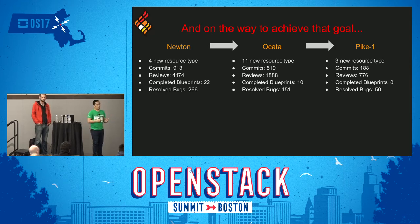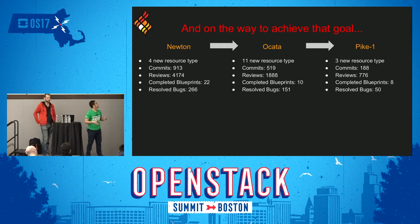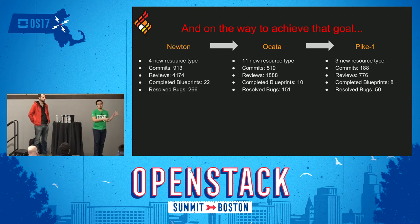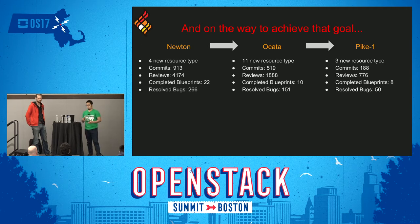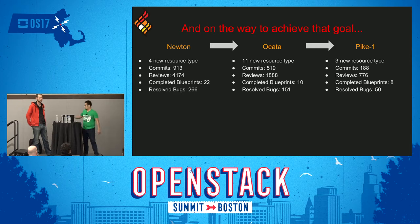On the way, we implemented 22 complete blueprints and 11 new resource types in Ocata — an incredible number for a relatively short release. We also had a Pike milestone 1 released in April with 3 more resource types and a complete blueprint. As an update, we'd like to say we are in good shape and have a lot of development underway which we'll introduce later.